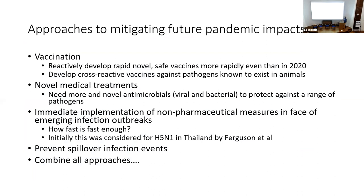Thinking about how to mitigate future pandemic impacts, and from the standpoint of these things being likely to have come from an animal reservoir: we've got the responsive vaccination option and the proactive option, and there's a lot of interest in trying to develop cross-reactive vaccines against families of pathogens that are known to exist in animals and that history dictates are more likely to spill over. There are also novel medical treatments, and it's interesting that some are likely coming through to deal with the current monkeypox global caseload in a way that perhaps hasn't happened during the pandemic against coronavirus. The larger pox viruses present more targets for treatment than some of the smaller, more rapid RNA viruses.